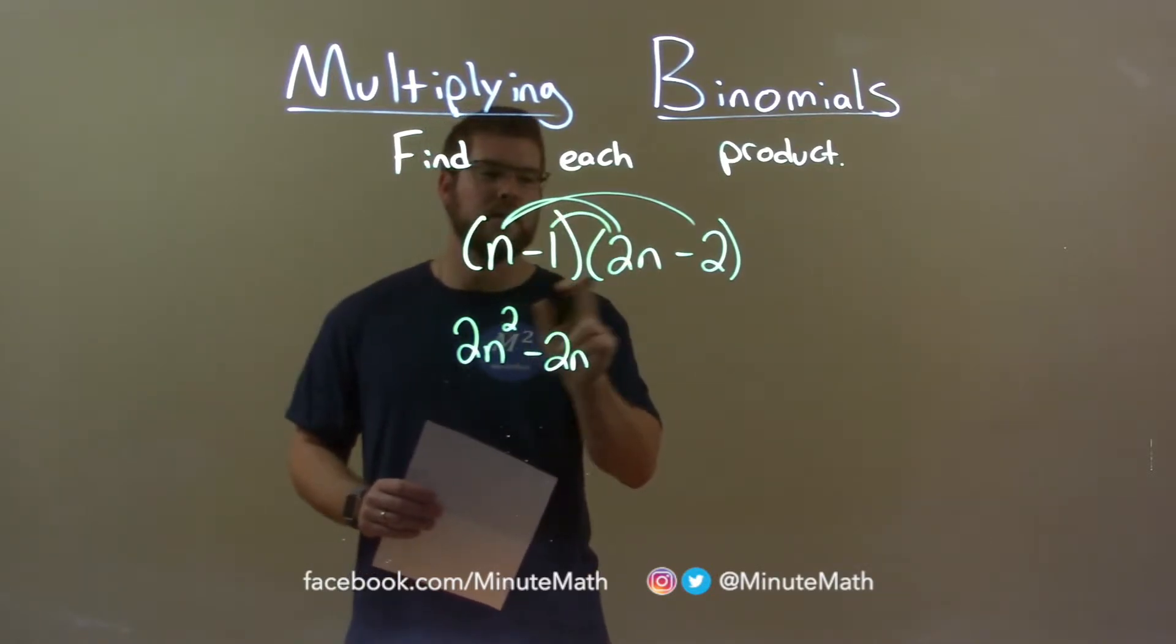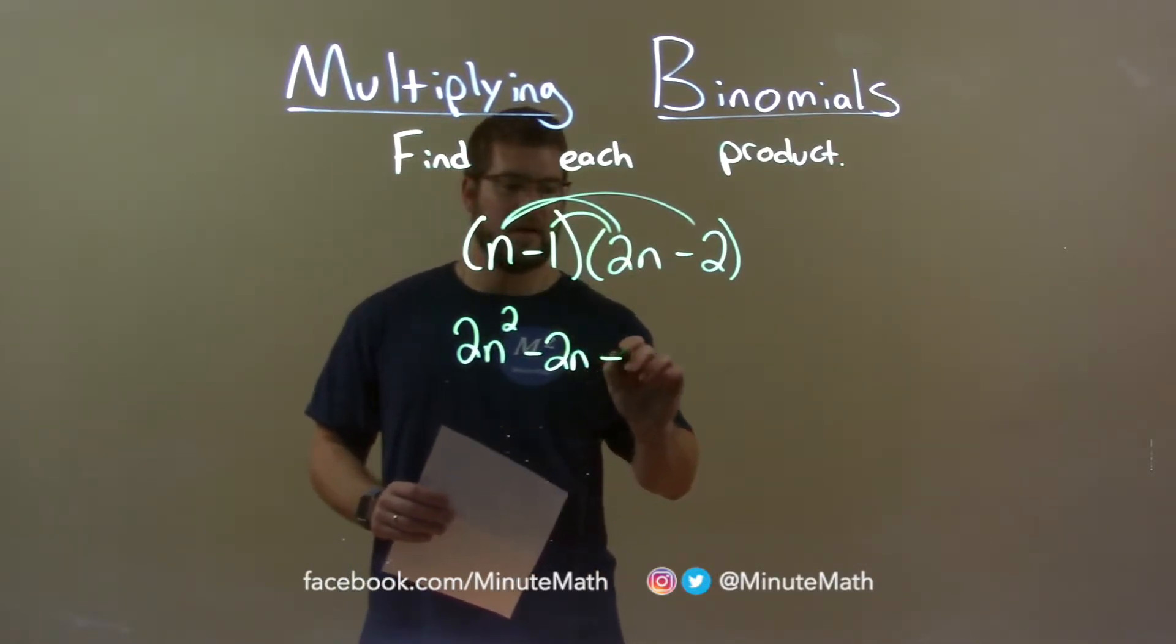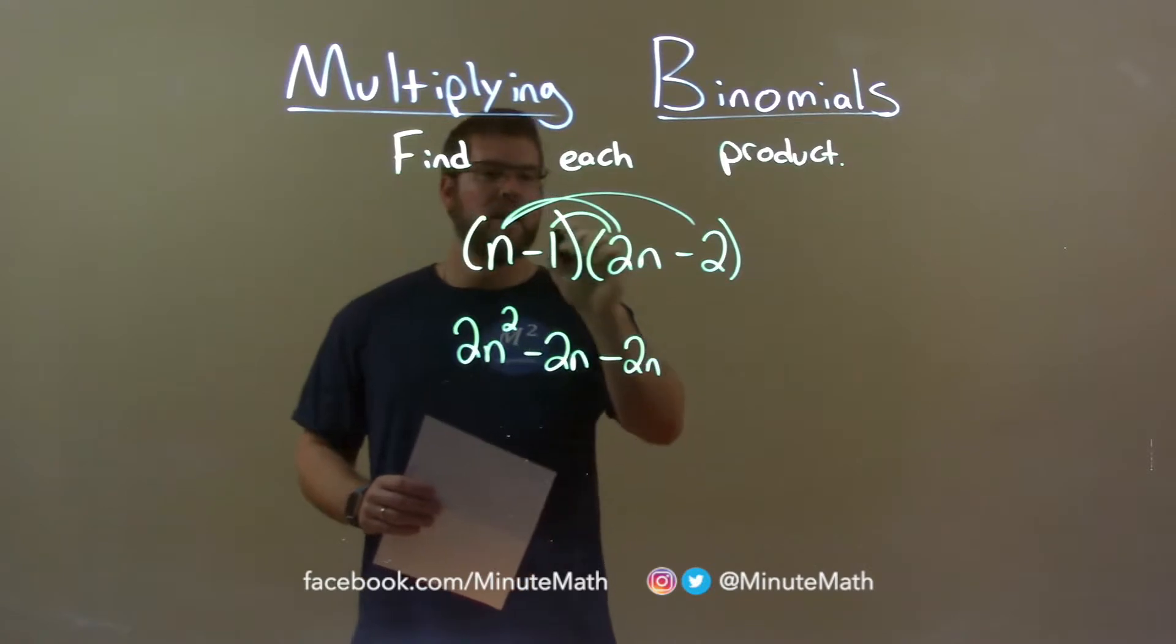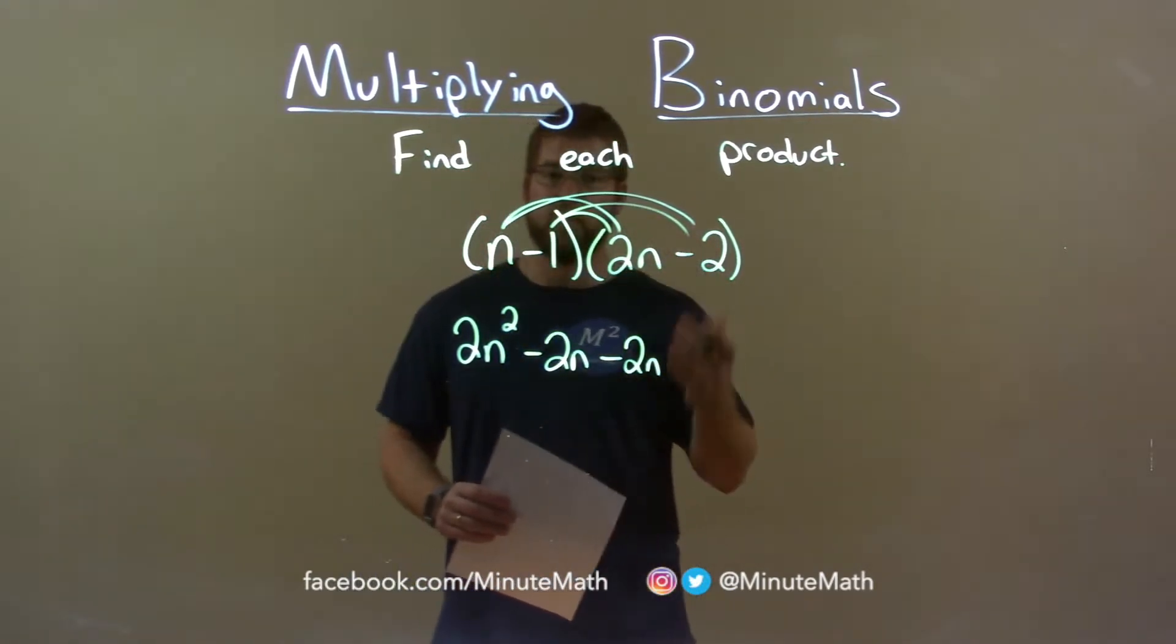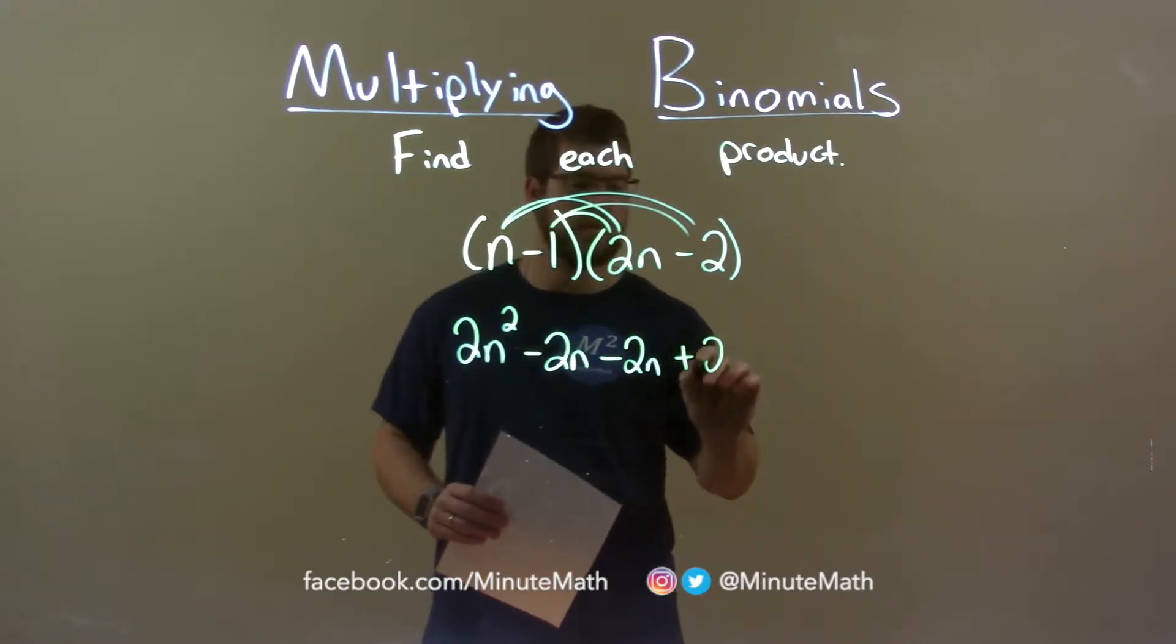A minus 1 times 2n is minus 2n, and a minus 1 times a minus 2, a negative times a negative is a positive, is a positive 2.